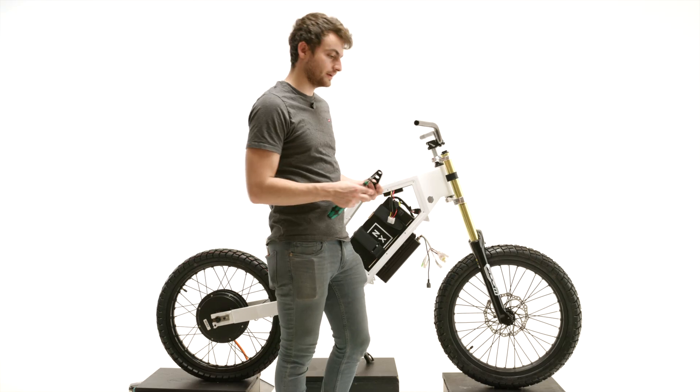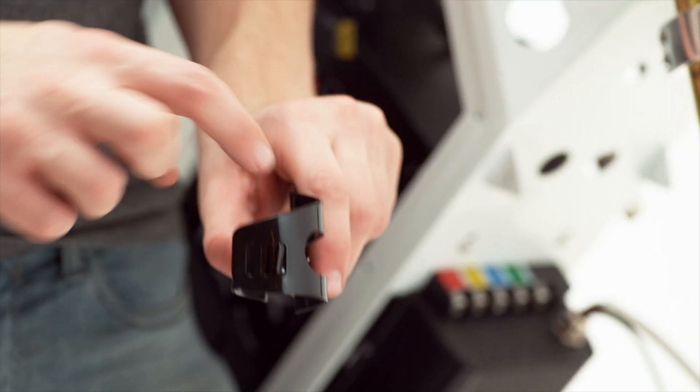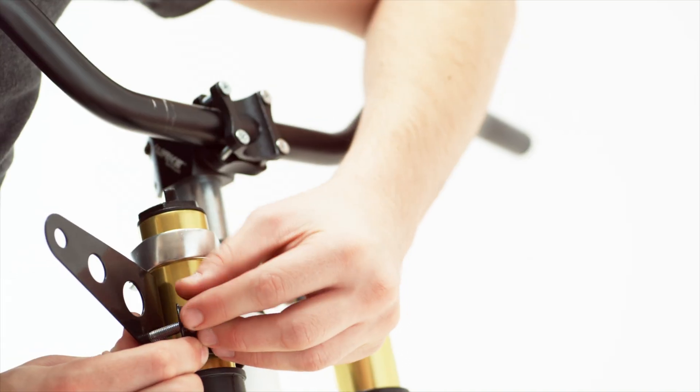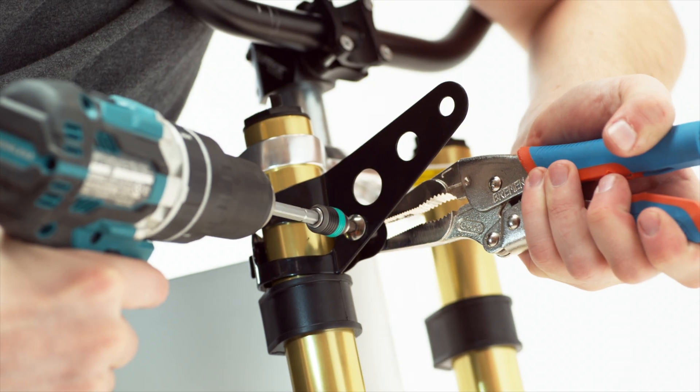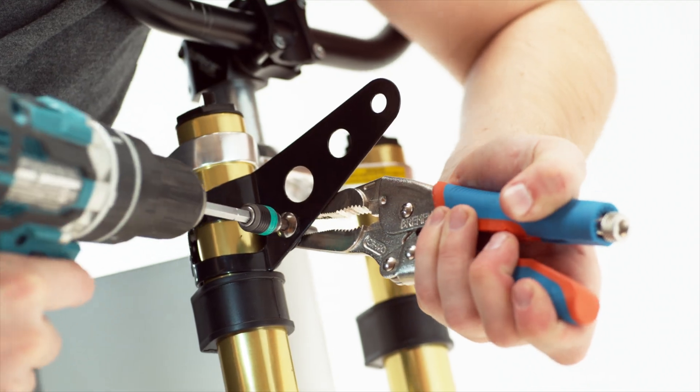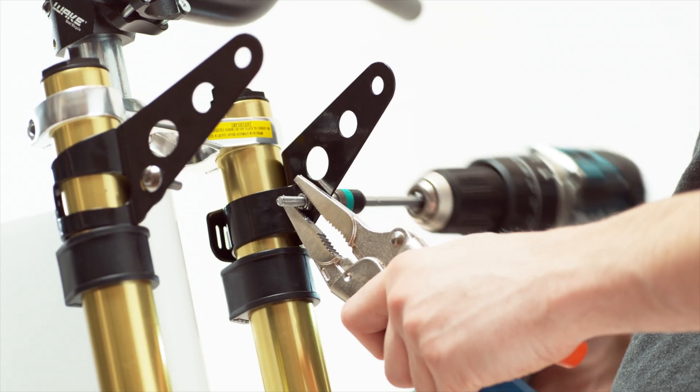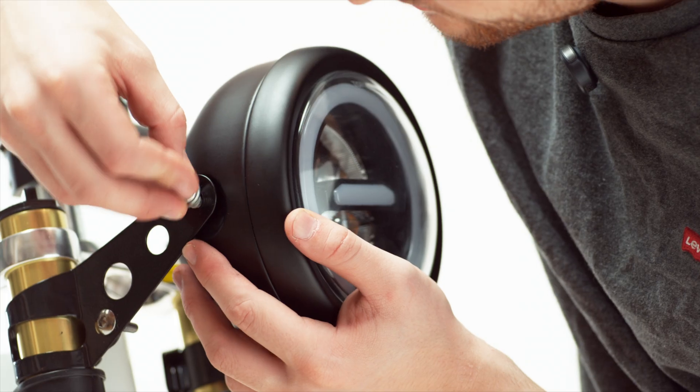Now we're going to do the headlight. I'm going to go ahead and use the first setting, the narrowest setting. And we'll repeat that on the other side. And with the brackets in place, we can throw on the headlight.